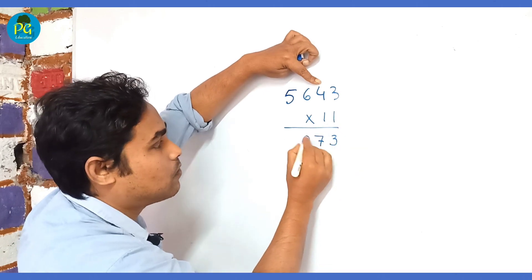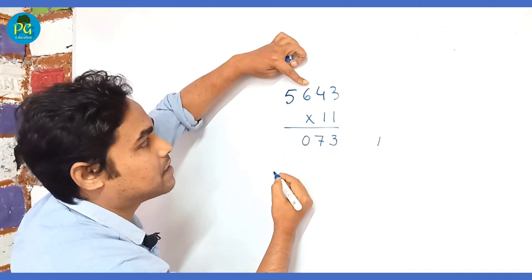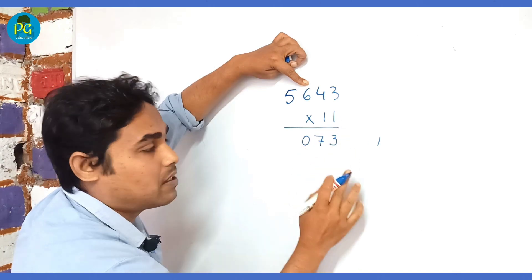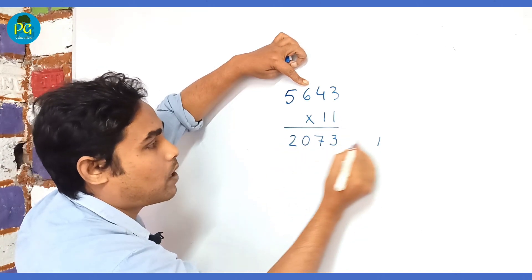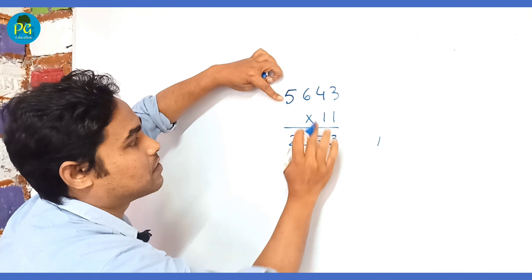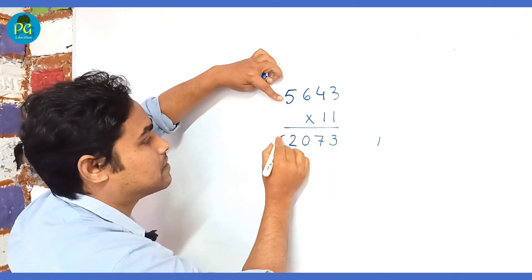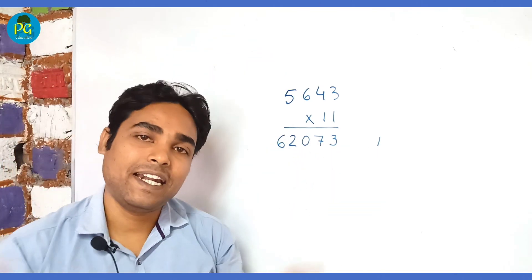And finally, 5 ones are 5, 5 plus 1 is 6. So in this way we can easily multiply any number by 11. Remember, this rule is applicable for multiples of 11 up to 99. If you want to multiply